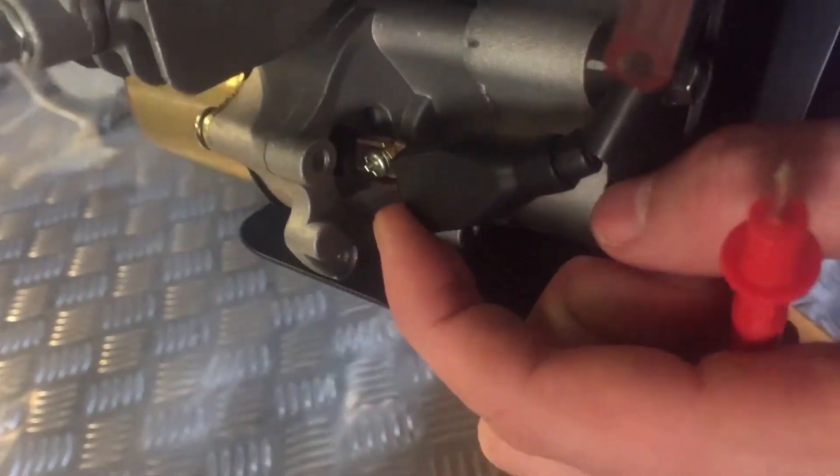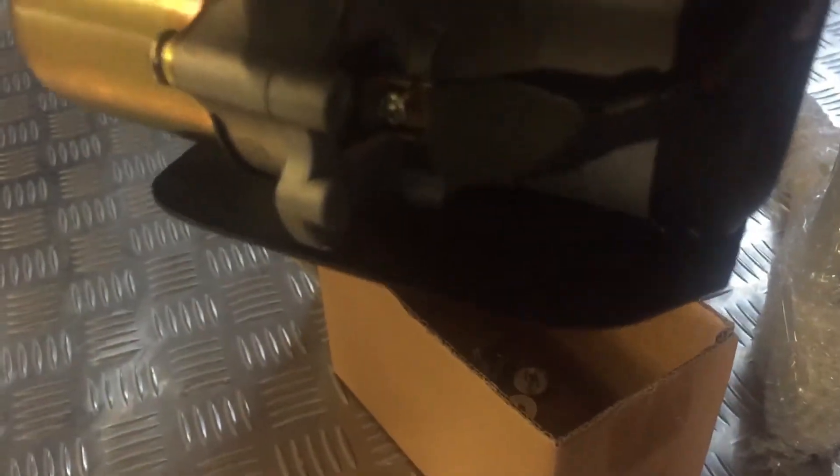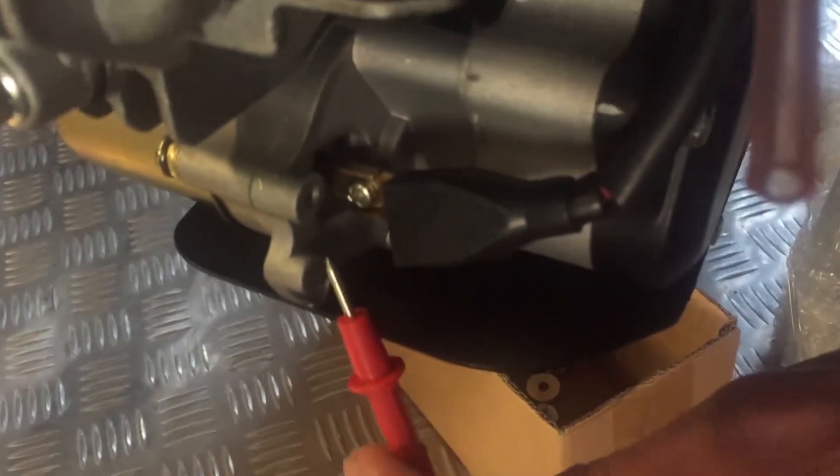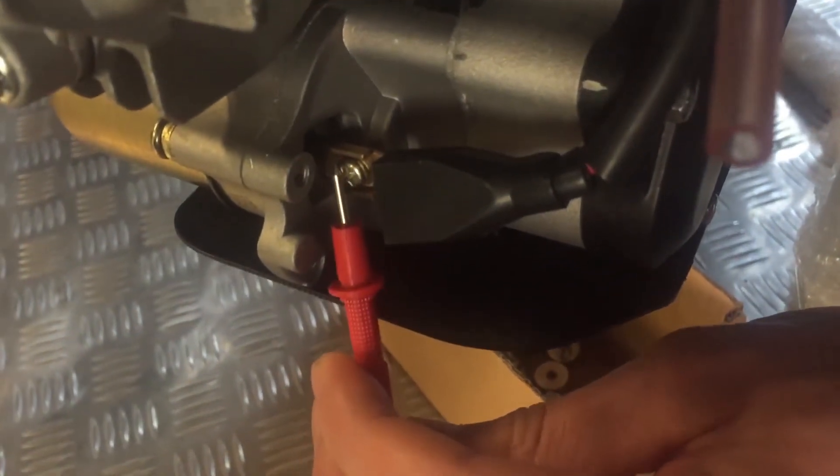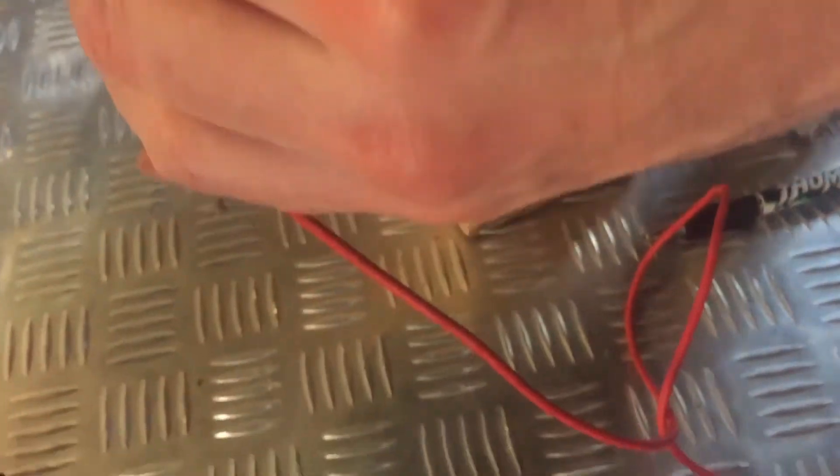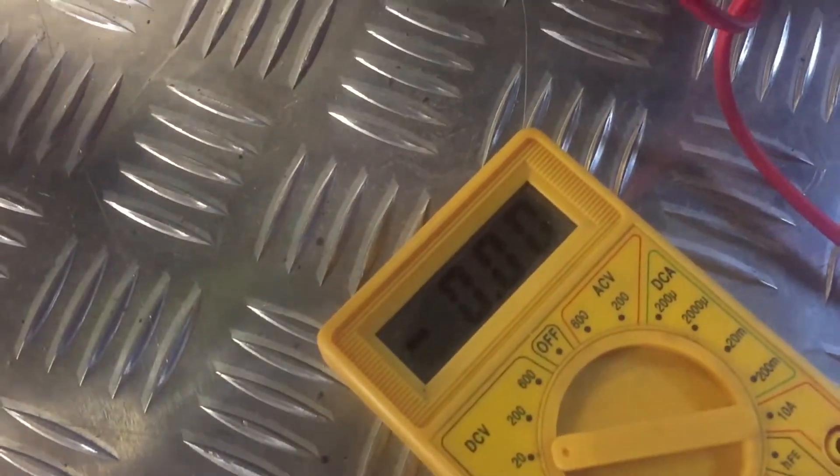Then we're going to get the red one and put the lead onto this power wire here going into your starter motor. We're going to press the starter button and see what happens on our voltmeter.